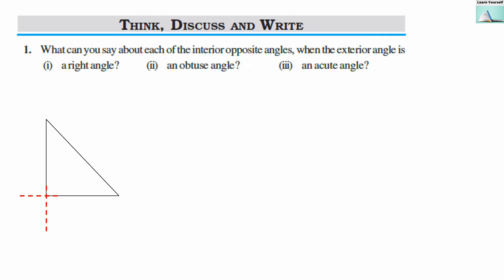Welcome to Learn Yourself. Think, discuss and write. Question one: what can you say about each of the interior opposite angles when the exterior angle is a right angle, obtuse angle, and acute angle? First, we are taking the right angle case. If the exterior angle is a right angle, what can we say about the interior opposite angles? We will imagine this as triangle ABC, and here our exterior angle is 90 degrees.